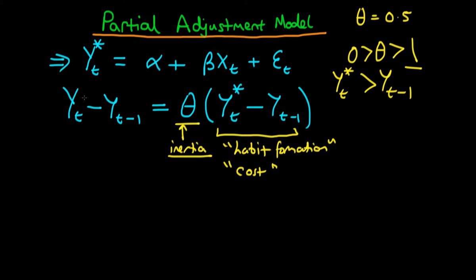So how do we go about estimating a partial adjustment model if we think that our particular process might be having this sort of mechanism? Well, the way to do this is to replace our equilibrium value of y by what it's given above: alpha plus beta xt plus et.